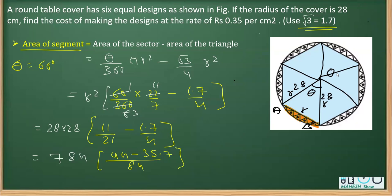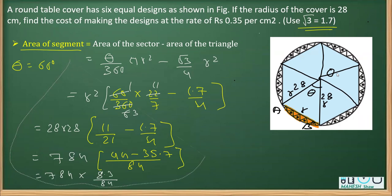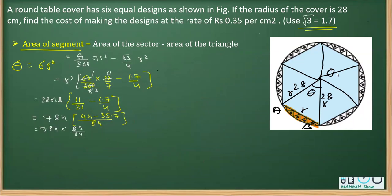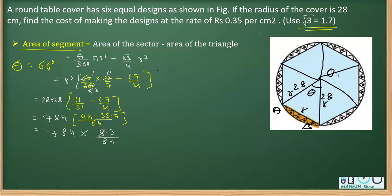Taking the LCM of 21 and 4, which is 84: 11 over 21 becomes 44 over 84, and 1.7 over 4 gives 1.7 multiplied by 21 which equals 35.7 over 84. So we get 784 into (44 minus 35.7) over 84, which gives 784 into 8.3 over 84. This can be further reduced. So we have the area of one design.